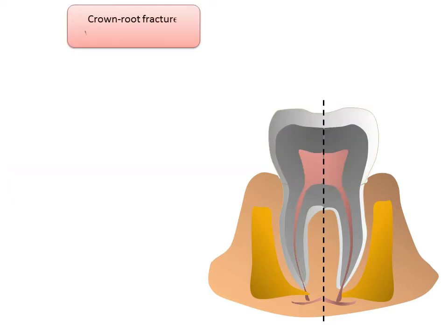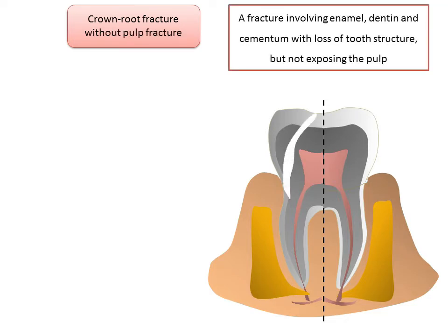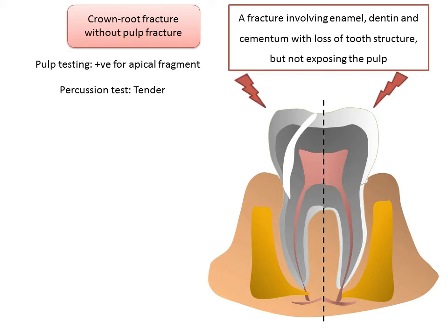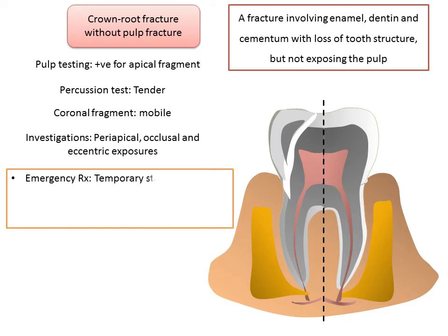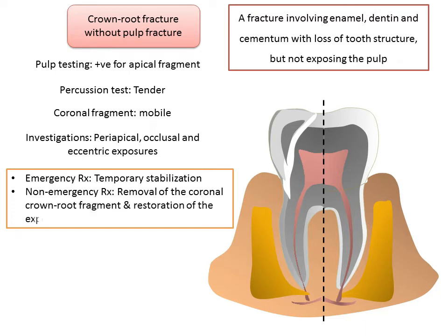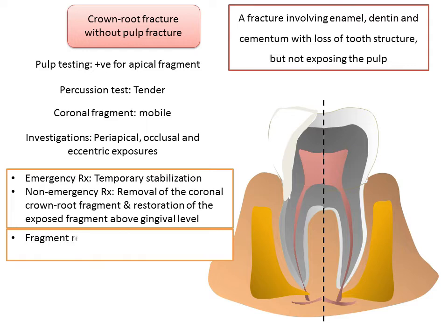Crown-root fracture without pulp exposure: the sensibility pulp test is usually positive for the apical fragment; the coronal fragment is mobile and tender to percussion. The crown fracture extends below the gingival margin and the apical extension is not clinically visible. Periapical, occlusal, and eccentric radiographs are recommended. Emergency management involves temporary stabilization of the loose segment to adjacent teeth. Non-emergency options include removal of the coronal fragment with restoration of the apical fragment, or removal with endodontic treatment and a post-retained crown, preceded by gingivectomy and sometimes osteectomy with osteoplasty.